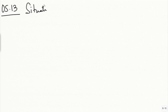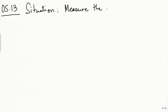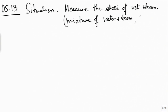OS 13 is about the situation where we have a throttling calorimeter. The situation is to measure the state of the calorimeter—the temperature of wet steam, that is a mixture of water and steam with dryness fraction x less than 1.